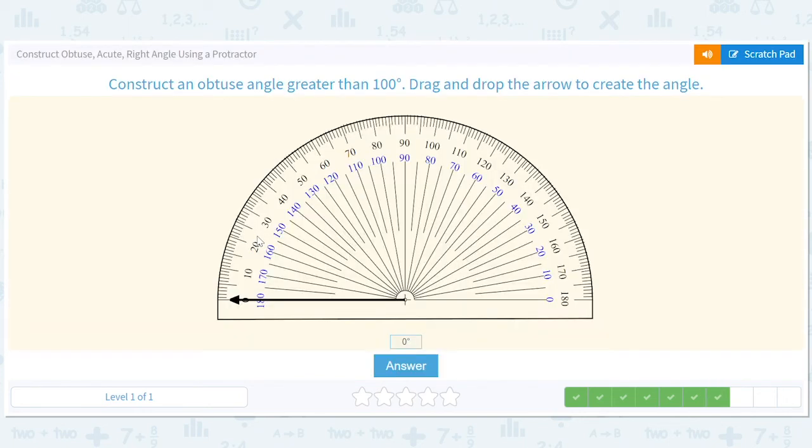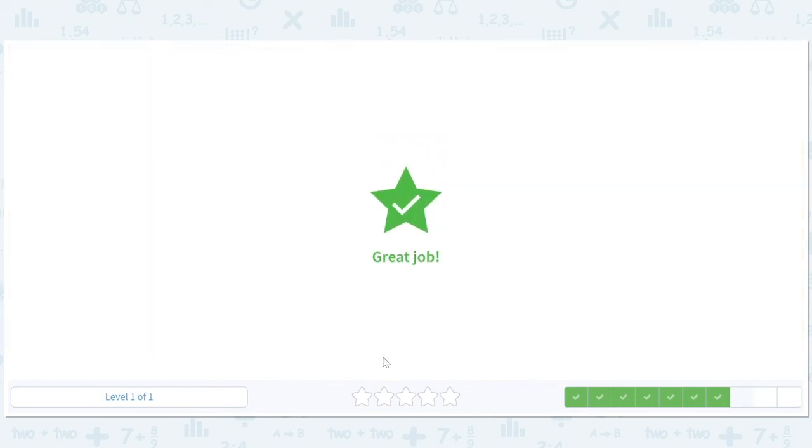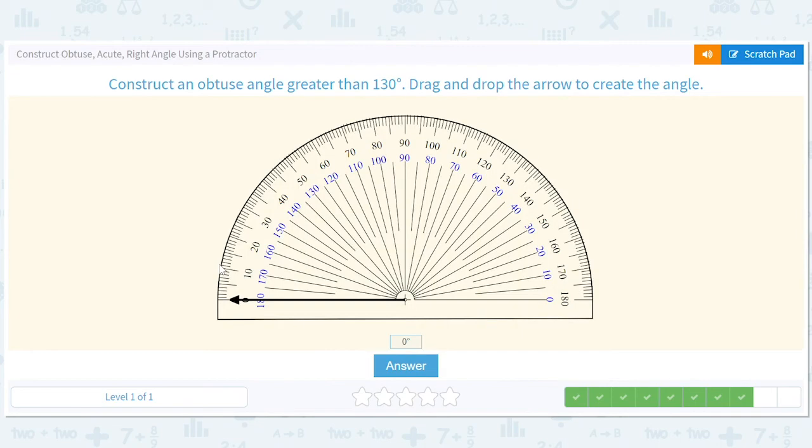Construct an obtuse angle that's greater than 100. 120 works because it's greater than 100, and anything greater than 100 is obtuse here. So that obtuse is redundant in this case. We don't need it.